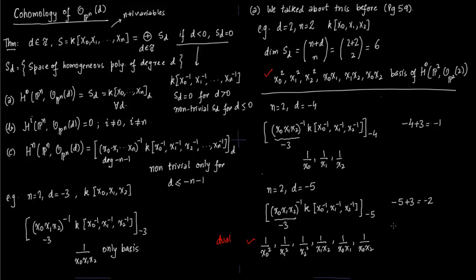So we can say that the space H^2(P^2, O_{P^2}(−5)) is dual to H^0(P^2, O_{P^2}(2)). We will come back to this duality later.